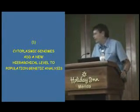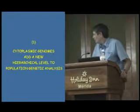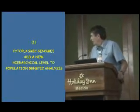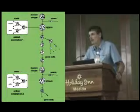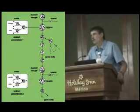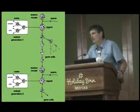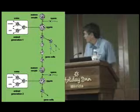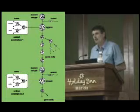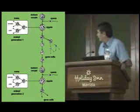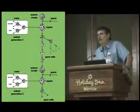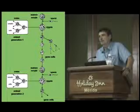The first point is that cytoplasmic genomes add a new hierarchical level to population genetic analysis. Unlike nuclear genes, mitochondria occur in large numbers of copies per cell — both somatic and germline cells — such that we really have populations of molecules within populations of cells within populations of organisms. This adds a whole new hierarchical level to population genetic analysis that simply never came up in the pre-mitochondrial era of studying nuclear genes.